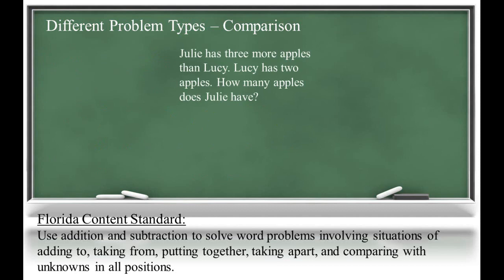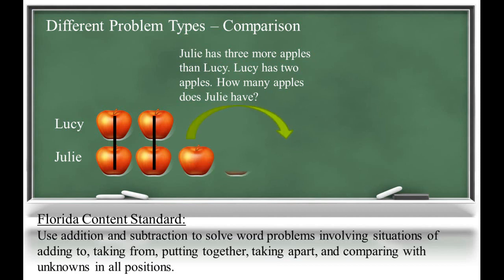In the next problem, Julie has three more apples than Lucy. Lucy has two apples. How many apples does Julie have? We know Julie and Lucy have two apples in common. And Julie has three more apples than Lucy. So Julie must have five apples.